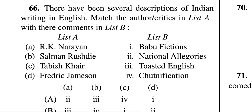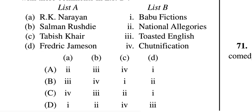The correct answer of question 66 is B. R.K. Narayan said Indian English is a 'Toasted English.' Salman Rushdie has said 'Chutnification.' Tabish Khair has said 'Babu Fiction,' and Fredric Jameson has said 'National Allegories.' These are all important — I hope you will go through them.